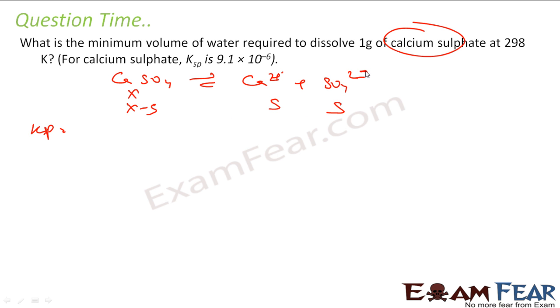So Ksp is what here? Concentration of this into concentration of this, that is s times s. And that value is given 9.1 times 10 to the power minus 6. So if we solve this, you get s is nothing but 3.02 times 10 to the power minus 3 moles per liter.